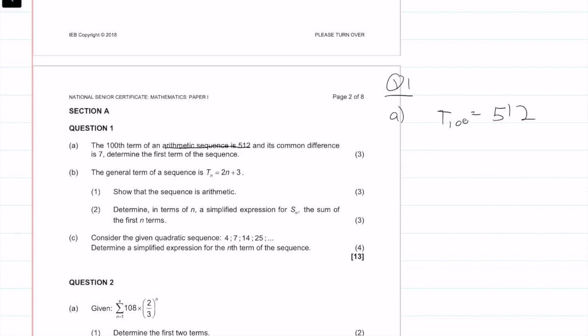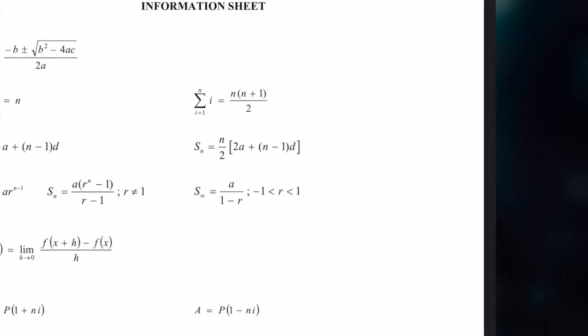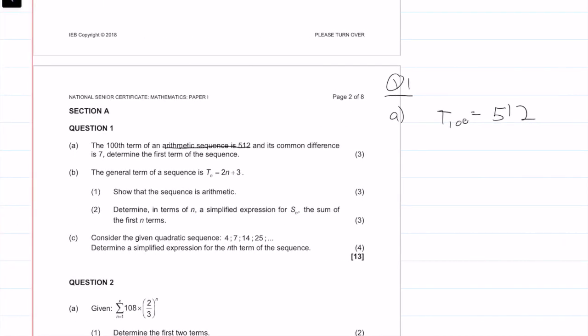But if we go to our formula sheet and we look at our arithmetic equation, TN equals A plus N minus 1D. So I can put that down. TN is equal to A plus N minus 1 times D, where A is your first number or first term, and D is the difference or the common difference which we know is equal to 7.